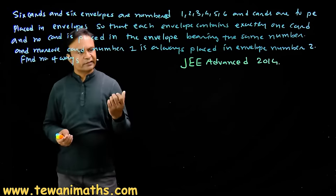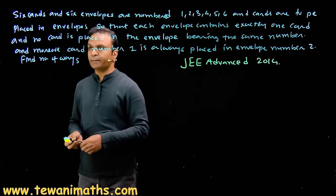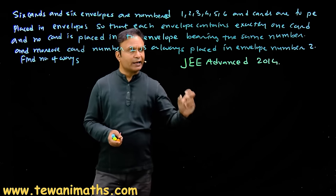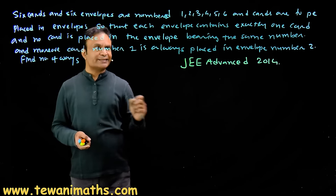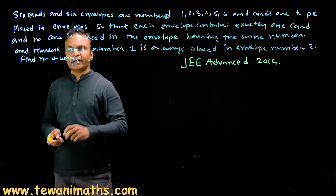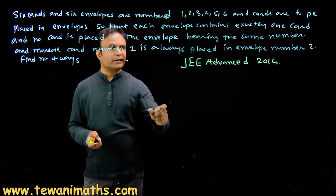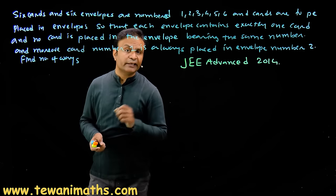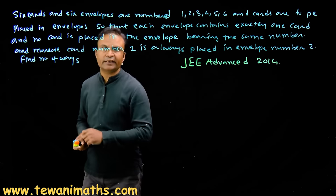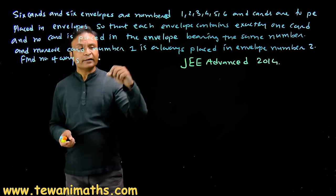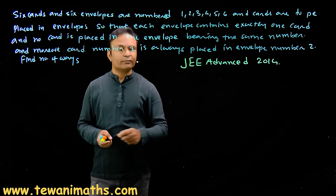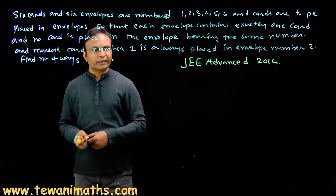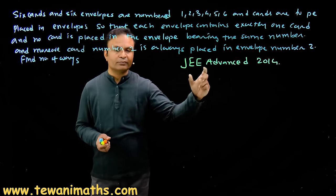There was a question in JEE Advanced 2014. The question is: 6 cards and 6 envelopes are numbered 1, 2, 3, 4, 5, 6, and cards are to be placed in envelopes so that each envelope contains exactly one card and no card is placed in the envelope bearing the same number. Moreover, card number 1 is always placed in envelope number 2. We have to find the number of ways. This is a conditional derangement in which card number 1 is fixed in envelope number 2.